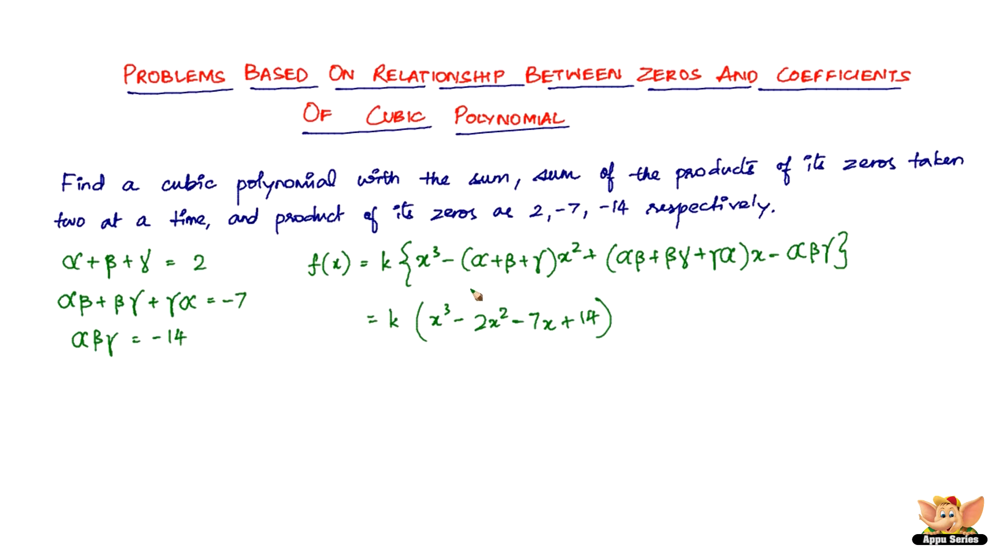This is how we find a cubic polynomial when information about the zeros is given. More importantly, remember that K is any nonzero real number. K cannot be zero because if K is zero, the whole equation doesn't stand.